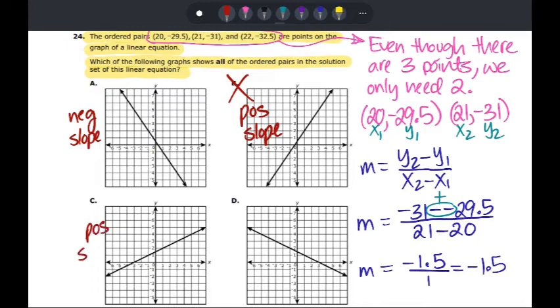Anything that has a positive slope, aka increasing from left to right, is terribly wrong. So we're not even going to look at those two answer choices. We're only going to look at the two answer choices that have negative slope.